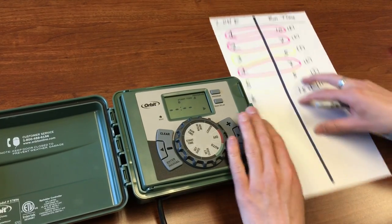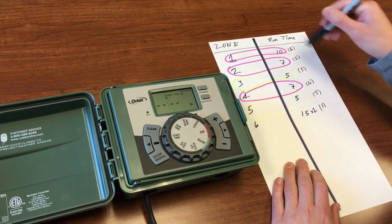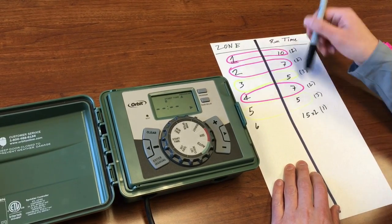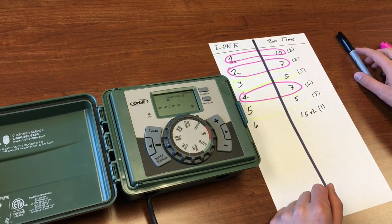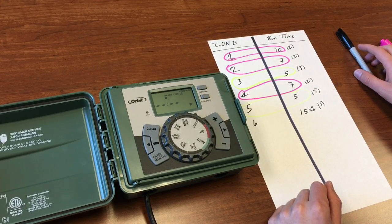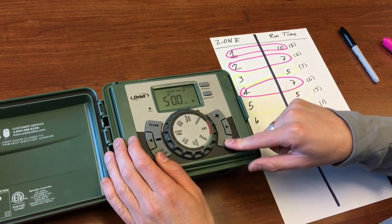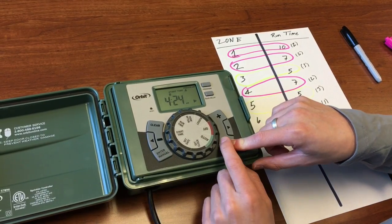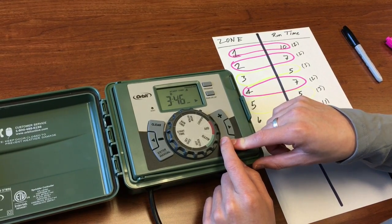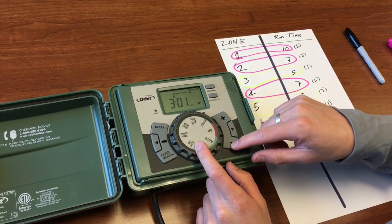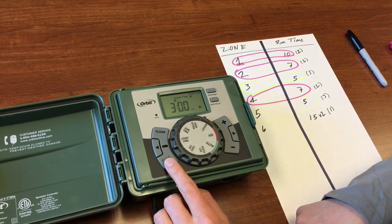We're on program A. If we wanted to go to program B we would click the program button to B, to C, and then back to A. Let's say that these zones 1, 2, and 4 that are running every other day are going to be on program A. Let's give this the first start time at 3 a.m.